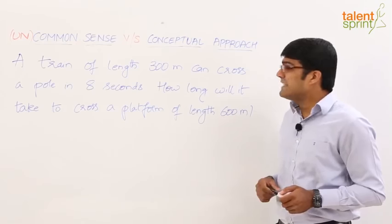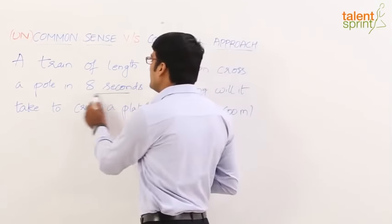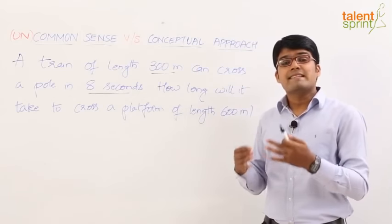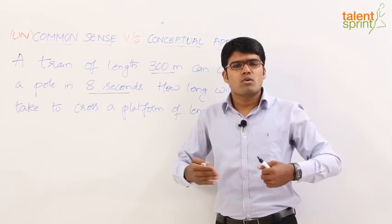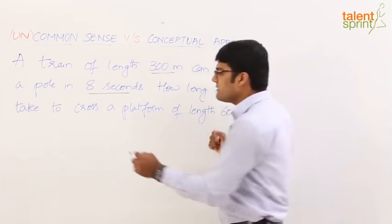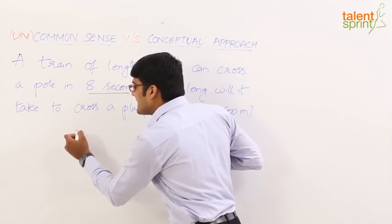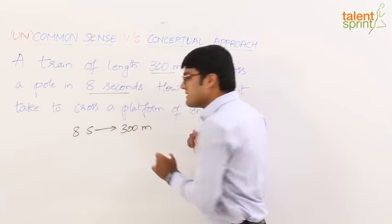If you observe, the train of length 300 meters can cross a pole in 8 seconds. This means that it takes 8 seconds for the train to cover a distance of 300 meters. We all know that crossing a pole involves covering its own length. So here clearly the train takes 8 seconds to cover a distance of 300 meters.